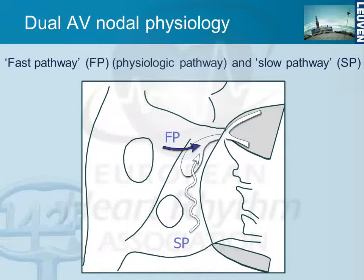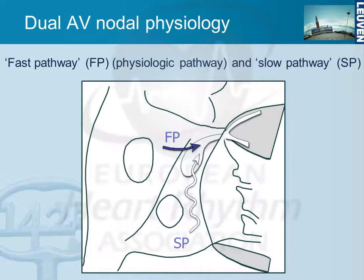There is the concept of dual AV nodal physiology. Conduction through the AV node can proceed via two directions: the physiologic one being the fast pathway, and there is also another one that connects more towards the inferior septum or posterior septum, which is the slow pathway. We all have a fast and a slow pathway, so having dual AV nodal physiology is no exception — it's the rule. You do not always see it in an EP study because often your patient is awake on the table, has a heightened adrenergic tone, and you may not be able to see the slow pathway.